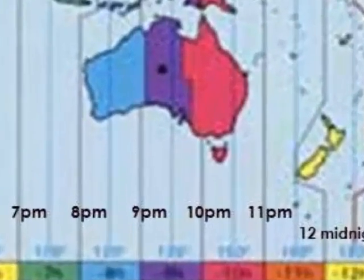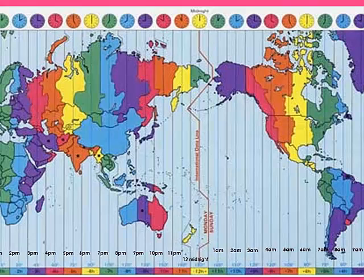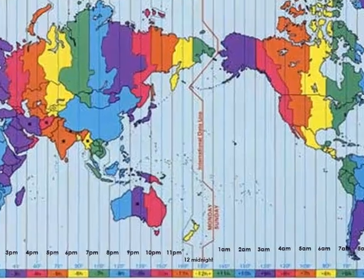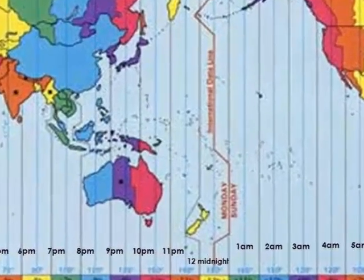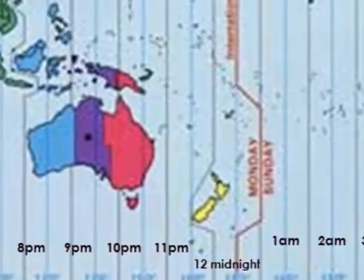For an example, Perth, Australia is 8pm. What time would it be in Sydney, Australia? When you move to the right, as mentioned earlier, you add one hour until you reach your destination, which is Sydney. If Perth is 8pm, Sydney would be 10pm. Same applies vice-versa.